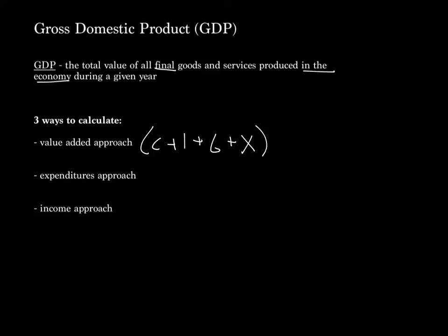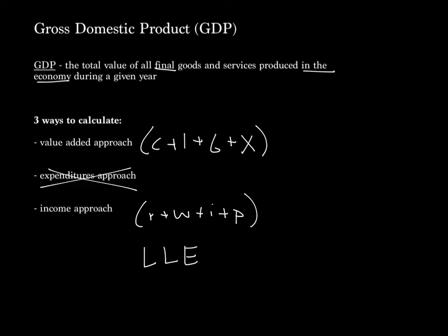Then we've got the Expenditures Approach, which we don't really deal with, so we're going to ignore that one. And then we've got the Income Approach, which is REWIP — Rent plus Wages plus Income plus Profit — which are the four payments for our factors of production: Land, Labor, Entrepreneurship, and Capital.